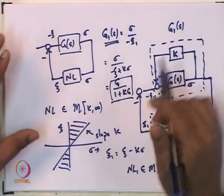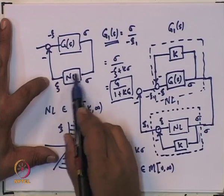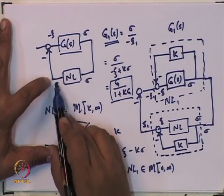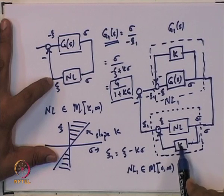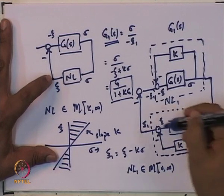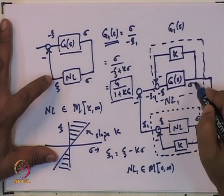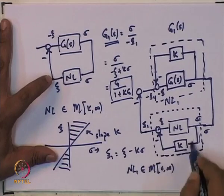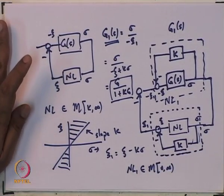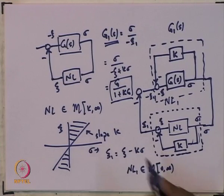In this loop, in the arm containing the non-linearity we fed back with a negative sign and gain k; upstairs we take sigma, multiply by k, and feed it back with a negative sign. So upstairs it is a negative feedback and in the non-linearity arm it is a negative feedforward. In this way we managed to convert a non-linearity in the K-infinity sector into a non-linearity in the 0-infinity sector.